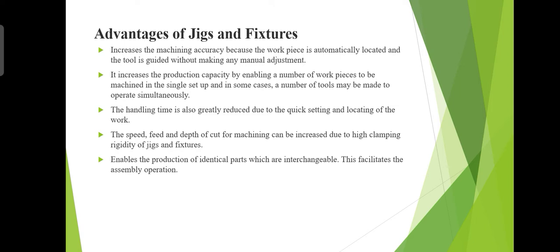A fixture only holds and positions the work but does not guide or locate the cutting tool. A fixture is bolted or clamped to the machine table and it is heavy in construction compared to a jig. Fixtures are used for milling, grinding, shaping, planning, boring, and also in welding operations. Small jigs are usually moved by hand on the drill press table until the guide or drill bushing is directly under the drill.